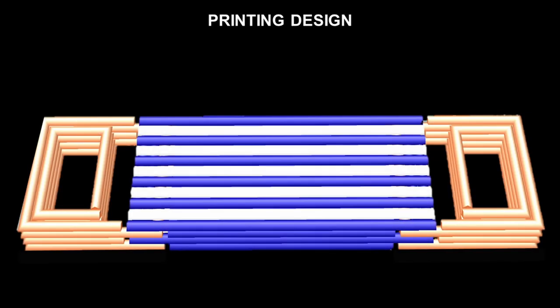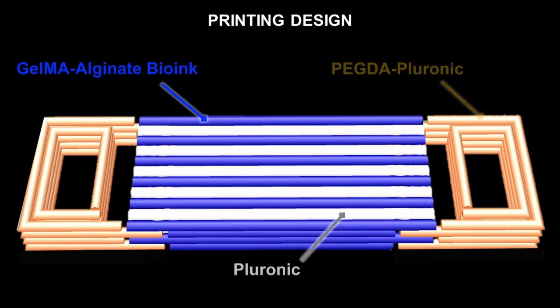To achieve that, we combined three inks: one bio-ink with cells to form tissue, one sacrificial ink to generate empty spaces for channel structure, and a synthetic ink for the anchors.